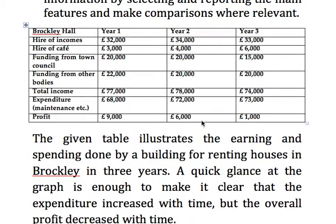The given table illustrates the earning and spending done by a building for renting houses in Broccoli over three years. A quick glance at the table makes it clear that the expenditure increased with time but the overall profit decreased with time, which means the income coming in has decreased.